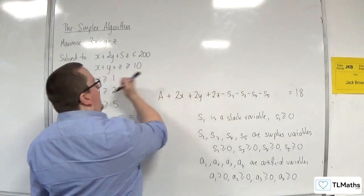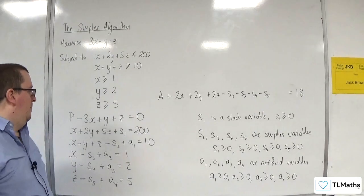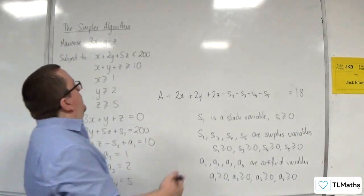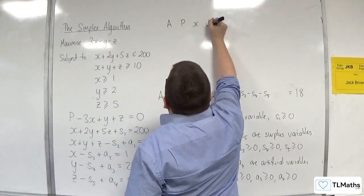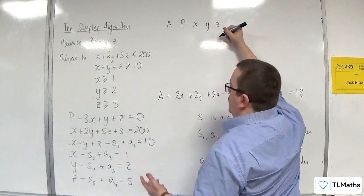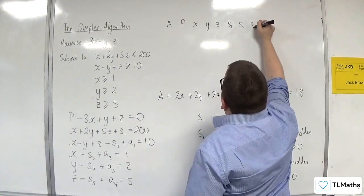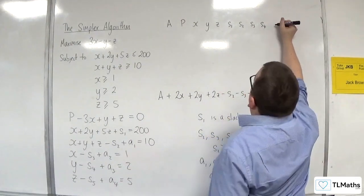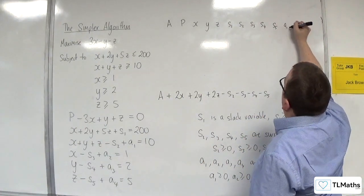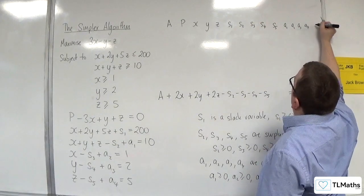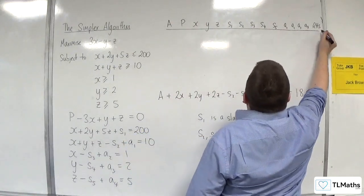I have my equations to put into my initial tableau for the two-stage simplex. The column headers are: A, p, x, y, z, then s1, s2, s3, s4, s5, then a1, a2, a3, a4, and a right-hand side. Quite a lot of variables in this one — probably a good job I'm not doing any of the iterations. You can get Excel to do that if you like.